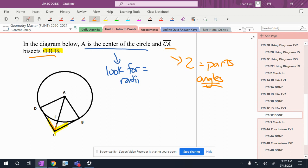So where are the two parts of D, C, B? Right here and right there. So that's what I've got going on. There's my pair of angles.